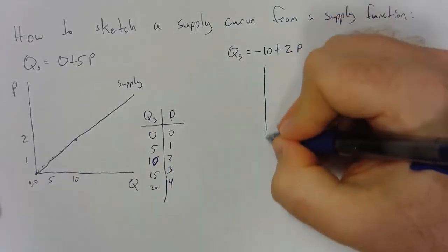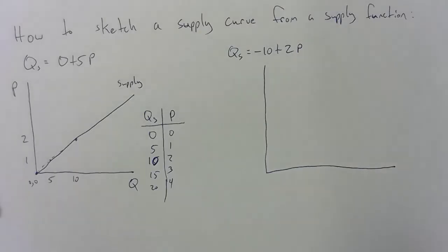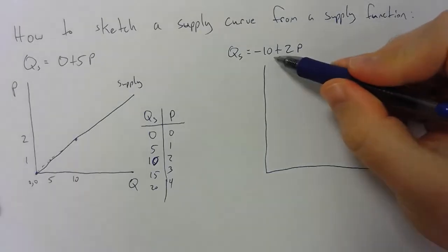Now, what may happen to be a little bit tricky is if they give you this negative ten as the coefficient or the intercept.